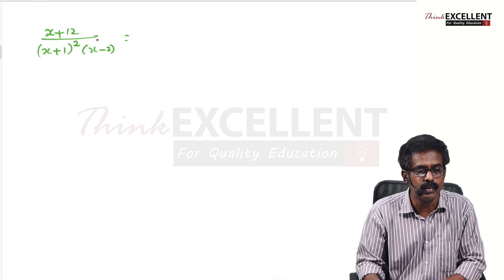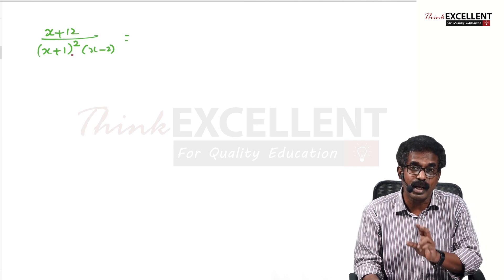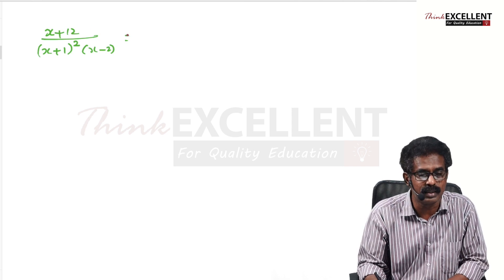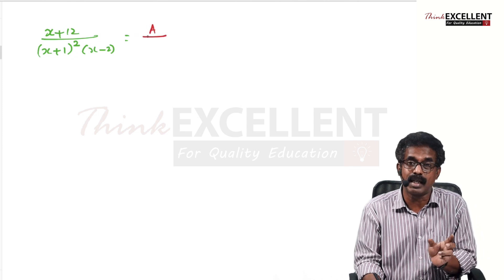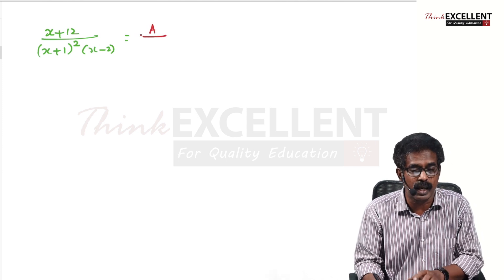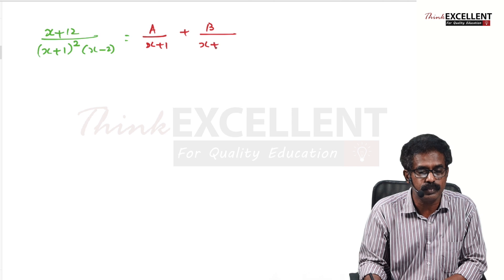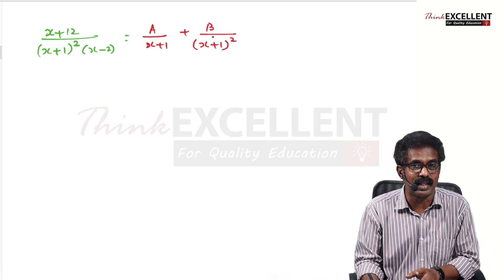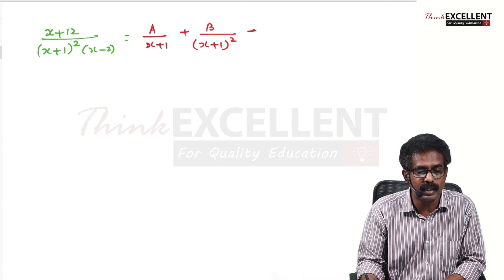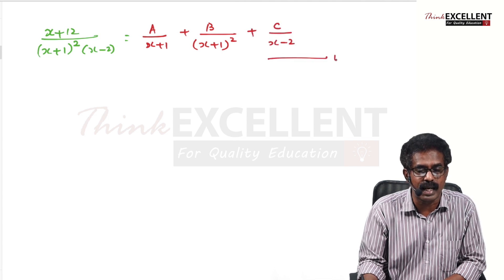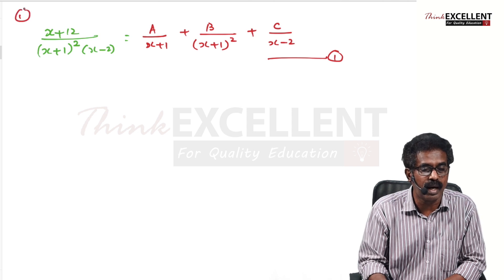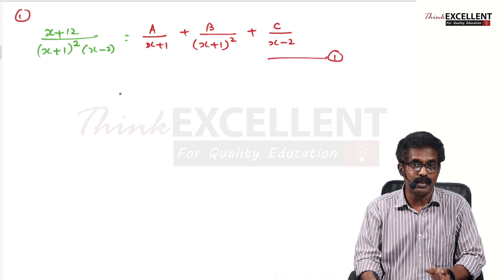For the second type, if the square is with (x + 1), you write two terms: A/(x + 1) plus B/(x + 1)². If it is a cube, you write three terms for that factor. Then for the remaining factor (x − 2), you write plus C/(x − 2). So now you have to find the values of A, B, and C.